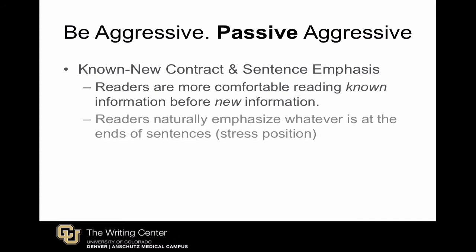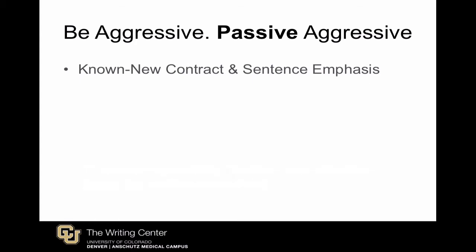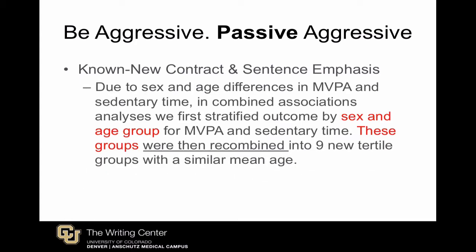Finally, there's the known-new contract and sentence emphasis, which often collude to make the passive voice ideal. As in this example, because one of the emphasized ideas at the end of the first sentence is 'sex and age group,' sentence cohesion is maintained by beginning the next sentence with the subject 'these groups,' followed by the verb 'were then recombined.' To insert an actor into this sentence — for example, 'researchers' or 'we' — would just interfere with reader understanding.